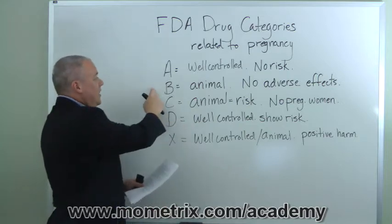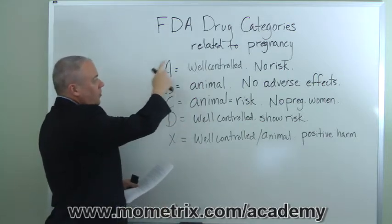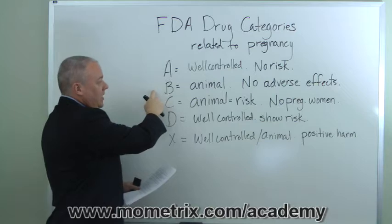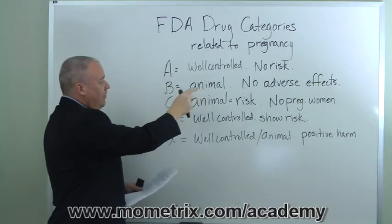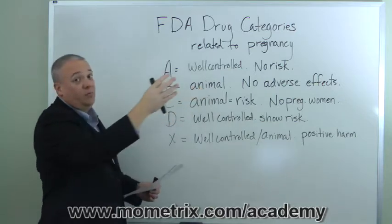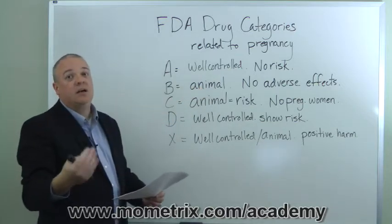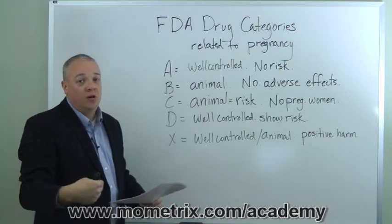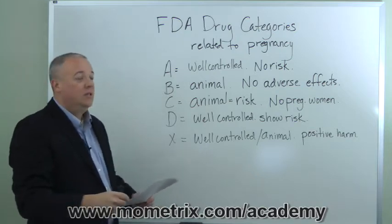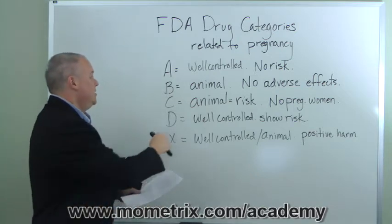So in Category B you've got either: no well-controlled studies on pregnant women but animal studies showing no adverse effects, or animal studies showing adverse effects but women's studies that corroborate there were no adverse effects on unborn babies.